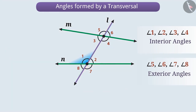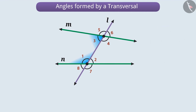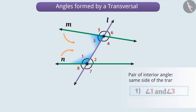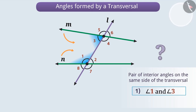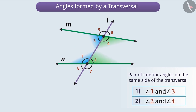Now, let us consider angle 1 and angle 3. We can see that angle 1 and angle 3 form a pair of interior angles on the same side of the transversal. There is another such pair hidden in the given figure — can you find it out? Try it yourself. You identified it correctly. Along with the pair of angle 1 and angle 3, angle 2 and angle 4 is also a pair of interior angles on the same side of the transversal.